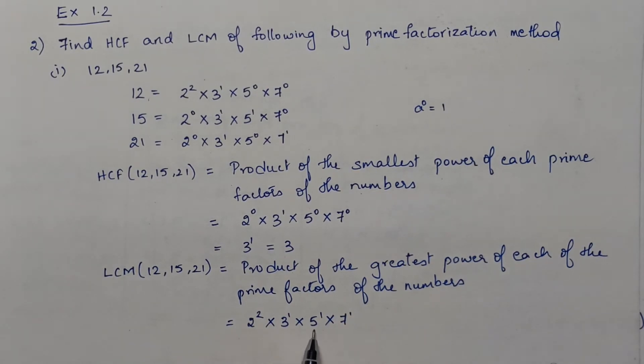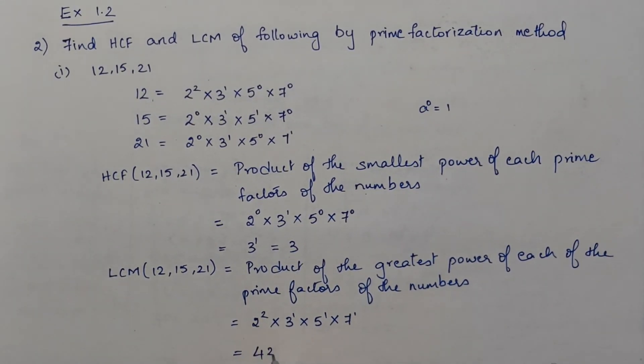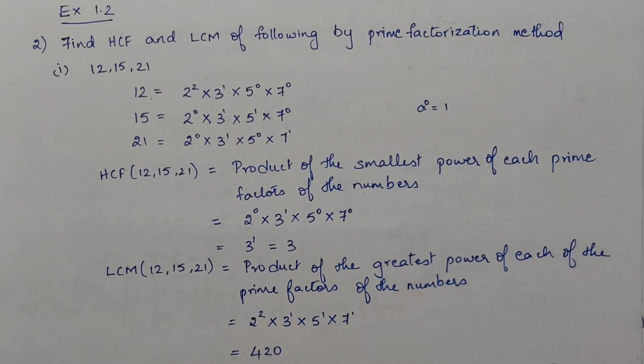So 2² is 4, 4 × 3 is 12, 12 × 5 is 60, 60 × 7 would give us final answer 420. So HCF is 3 and the LCM is 420. Take a screenshot or download the solution link from the description box below.